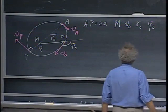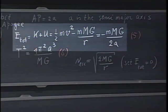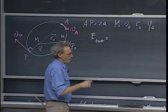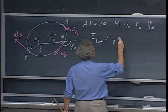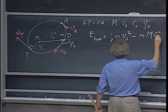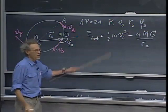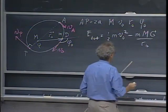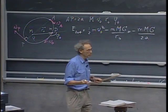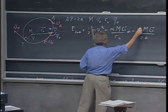The semi-major axis A is easiest. Using conservation of mechanical energy — equation five — the total energy equals one-half m V₀² minus m·M·G / R₀, which also equals minus m·M·G / 2A. That gives one equation with one unknown, A; little m always cancels in gravity problems. If total energy were positive, A would have to be negative — physical nonsense — so this only holds for bound orbits.